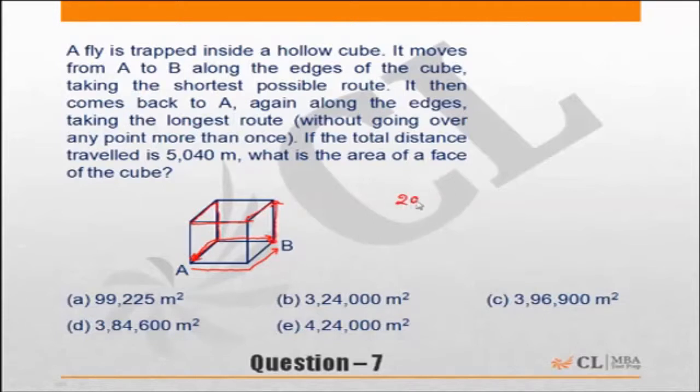Let's say 2a, and longest distance was six lengths, 6a. If the total distance traveled was 5040, that means 8a equals 5040, so a will be 630 meters.